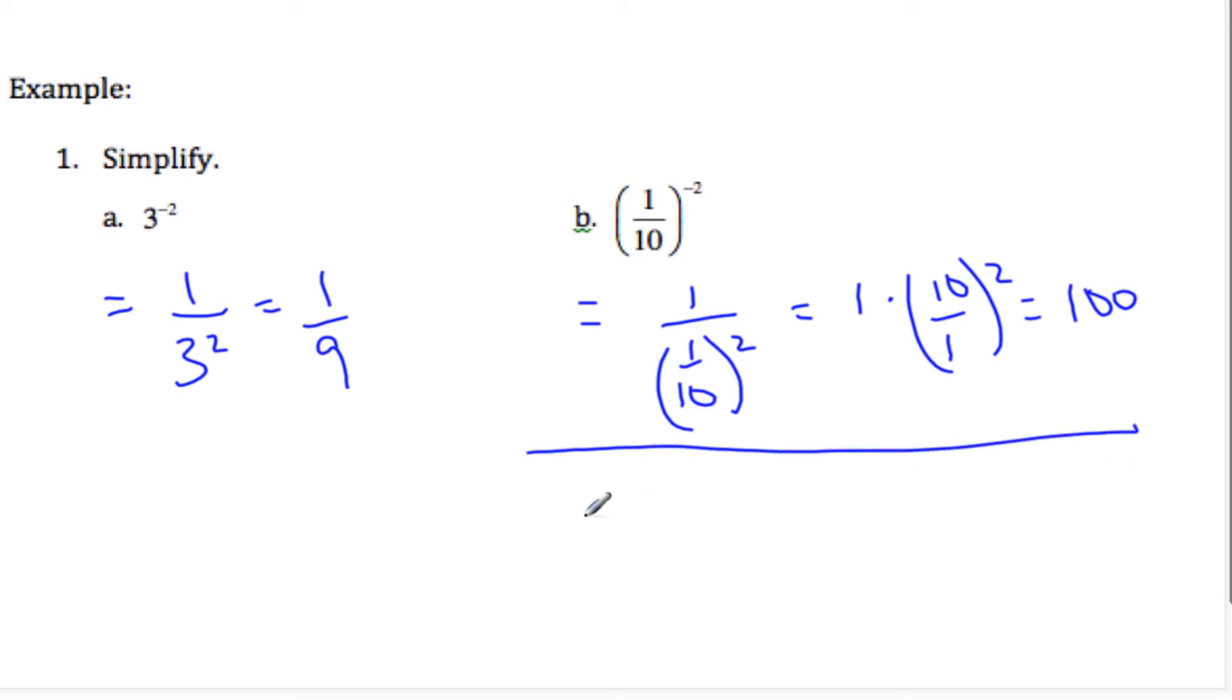I can think of it another way, too. I think it's an easier way to think about, if it's negative, I can say this is 1 to the negative 2 over 10 to the negative 2. And so I have to, this goes to the bottom, be 1 squared. This negative 2 flips up to the top 10 squared, which is 100 over 1, which is 100.